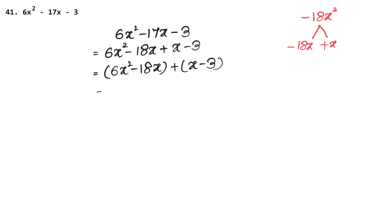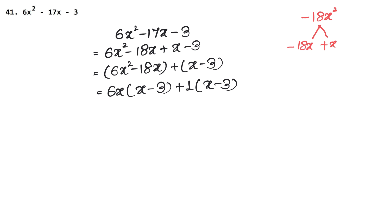Now pairing: 6x squared minus 18x in one bracket, plus x minus 3 in another bracket. In the first bracket, 6 and x are common, so 6x is common, giving 1x minus 3. In the second bracket, there is nothing common so we take 1 as common and keep the values as they are. Both brackets have x minus 3 the same.